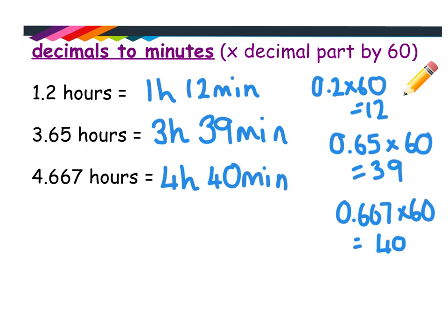So the unit bit at the front, if we have a number of hours, that does not go into your calculator. You can write that straight down as that's your number of hours. So when I say it's the decimal part that we times by 60, I mean it's the dot bit, the 0.2, the 0.65, the 0.667. They are the bits that go into your calculator.